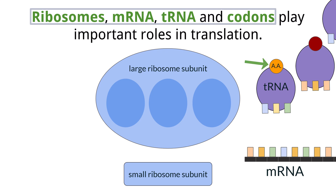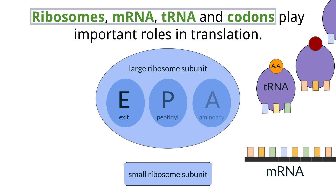The large ribosomal subunit has three specific spots on it that allow it to hold tRNA molecules, in which it can only hold two at a time. These sites are abbreviated EPA and stand for the amino acid site, the peptidyl site, and the exit site.